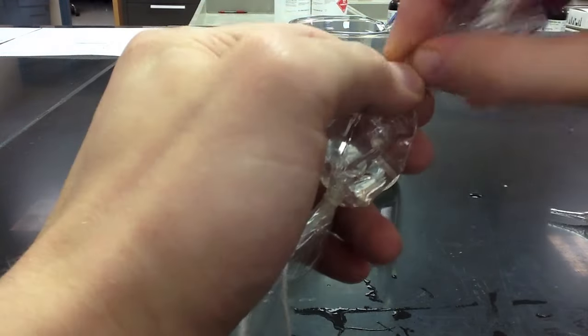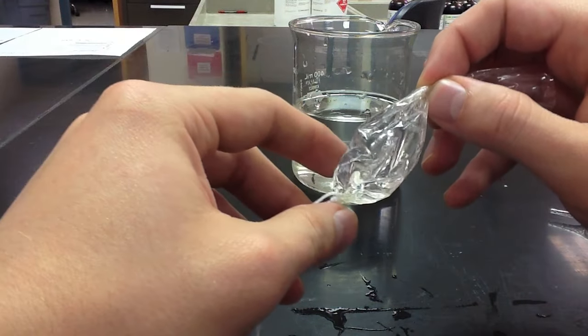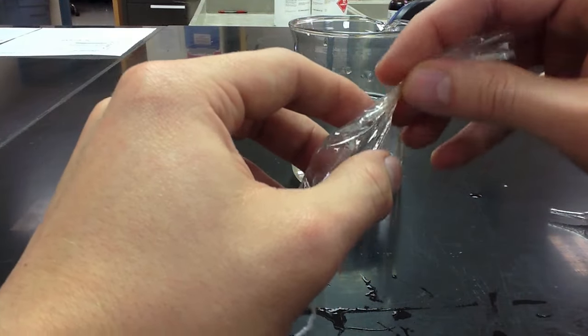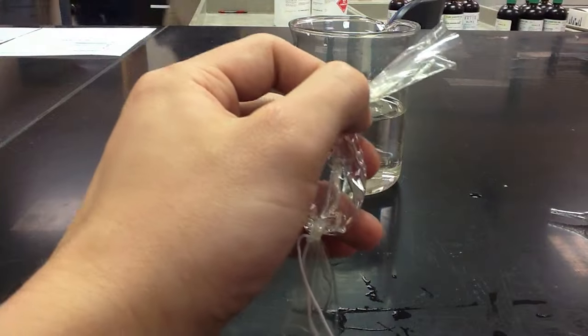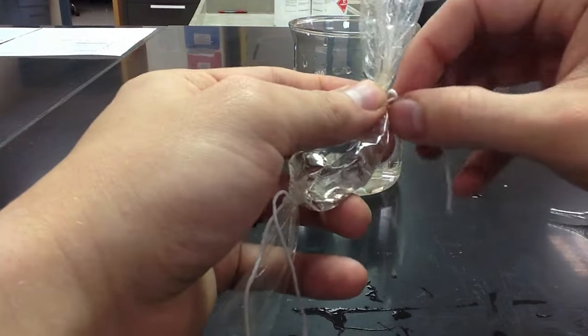Once this is done, you'll take the second piece of string, you will wrap the second end of the bag in that piece of string and secure it tightly so that no liquid can leak out of this end of the bag either.